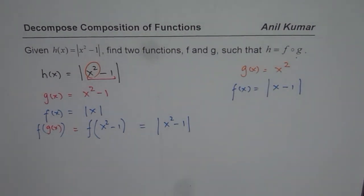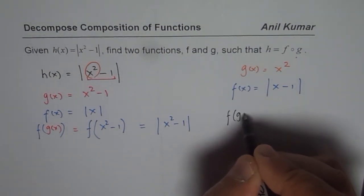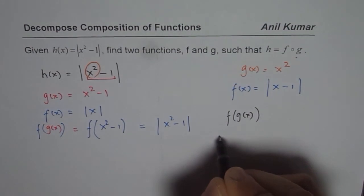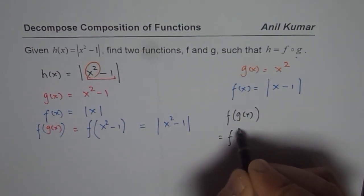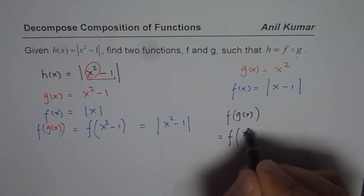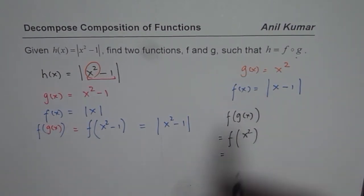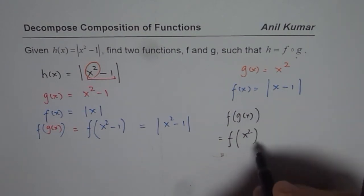So try this out and see if that works. So let us try it out. So in this particular case, we have f of g of x as equal to f of g of x is x square. So x square, and now we can write this as, if I substitute x with x square, what do I get? I get absolute x square minus 1.